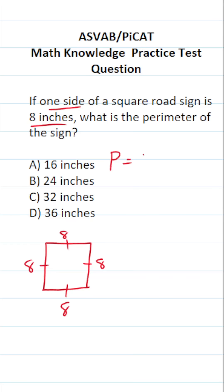So the perimeter of this square is going to be 8 plus 8 plus 8 plus 8. 8 plus 8 plus 8 plus 8 is 32.